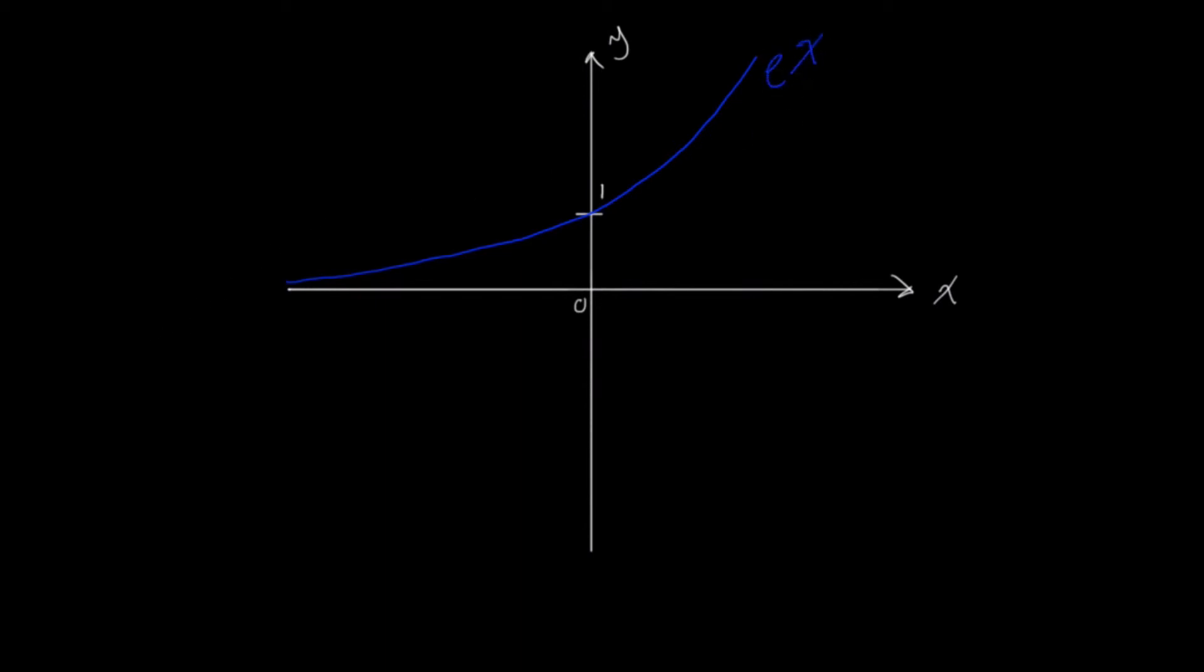Let's just say this is e to the x. e to the negative x, on the other hand, is just the opposite. Notice there's a horizontal asymptote at y equals 0. So this is e to the negative x, and this works for really any exponential function.